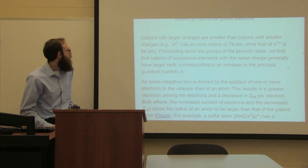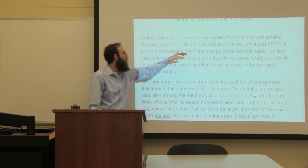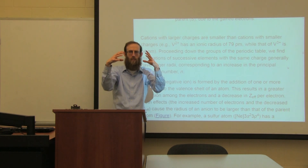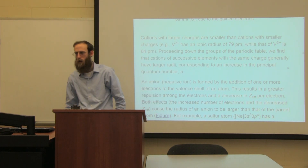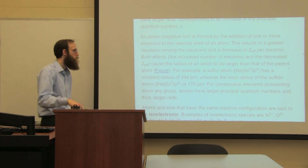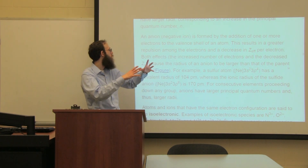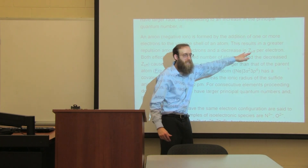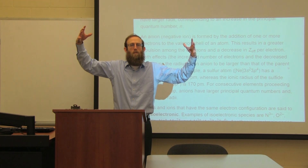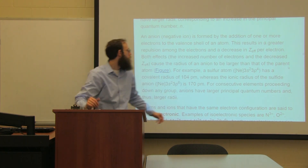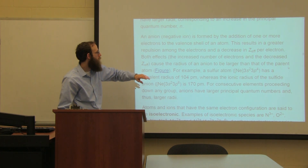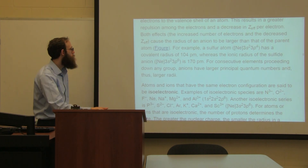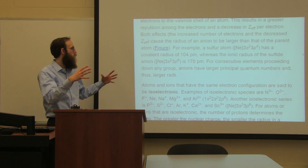Cations with larger charges are smaller than cations with smaller charges - take off one electron and it shrinks, two electrons and it shrinks even more, three electrons even more. For anions, the opposite is true: as we add electrons to the valence shell, this results in greater repulsion and a decrease in effective charge, so everything moves out a little bit. Things get bigger. The more electrons you put in, the larger they're going to be.